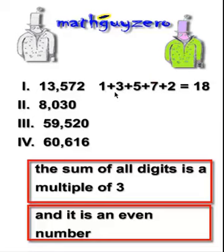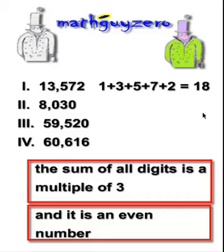The first one: 1 plus 3 plus 5 plus 7 plus 2 equals 18. 18 is a multiple of 3 — 6 times 3 is 18. And it's even. So that one is divisible by 6.